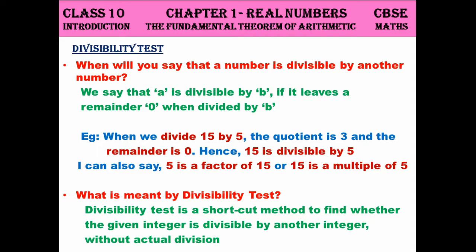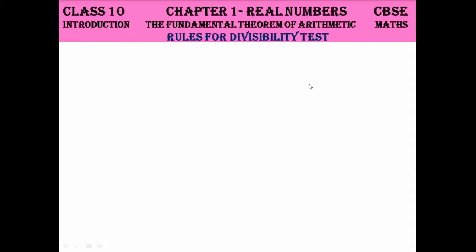So what is meant by divisibility test? Divisibility test is a shortcut method — a small rule defined to find whether a given integer is divisible by another integer or not, without actual division. For example, without actually dividing 15 by 5, we can check whether the number is divisible by 5 using a certain rule called the divisibility test. That is the main purpose of divisibility test. Let's see the rules from 1 to 20, one by one.